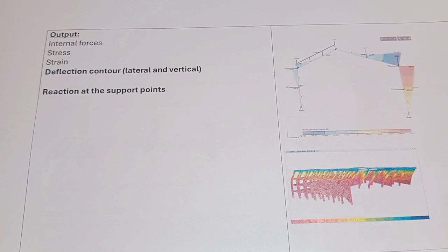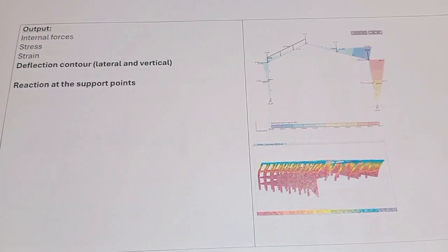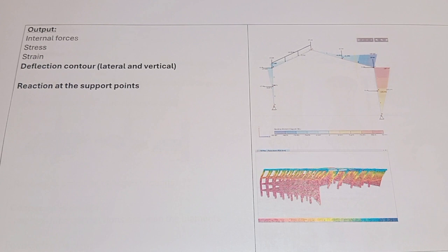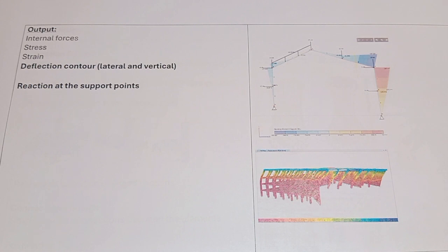From the analysis stage, we need certain outputs for the next step. The main outputs are the loads in elements and support points. Element loads are internal forces: bending, axial force, shear force, and torsion. We also need to know the stress and strain levels under load combinations in both limit states, and we need deflection checks for lateral and vertical directions and vibration checks — all compared against code and standard limits.